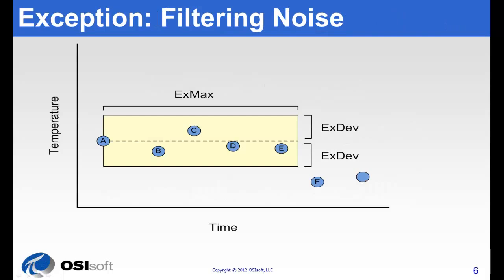There's two parts to this: exception and compression. We're going to go over the first test, exception first. Exception reporting takes place on the PI interface node before the value is ever sent to the PI server. The point of exception is to reduce the communication burden between the PI server and the interface nodes by filtering out what is obvious noise.